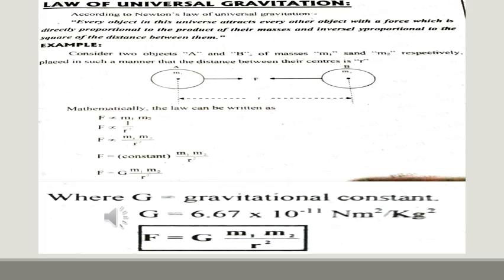According to this law, every object in this universe attracts every other object with a force which is directly proportional to the product of their masses and inversely proportional to the square of the distance between their centers.